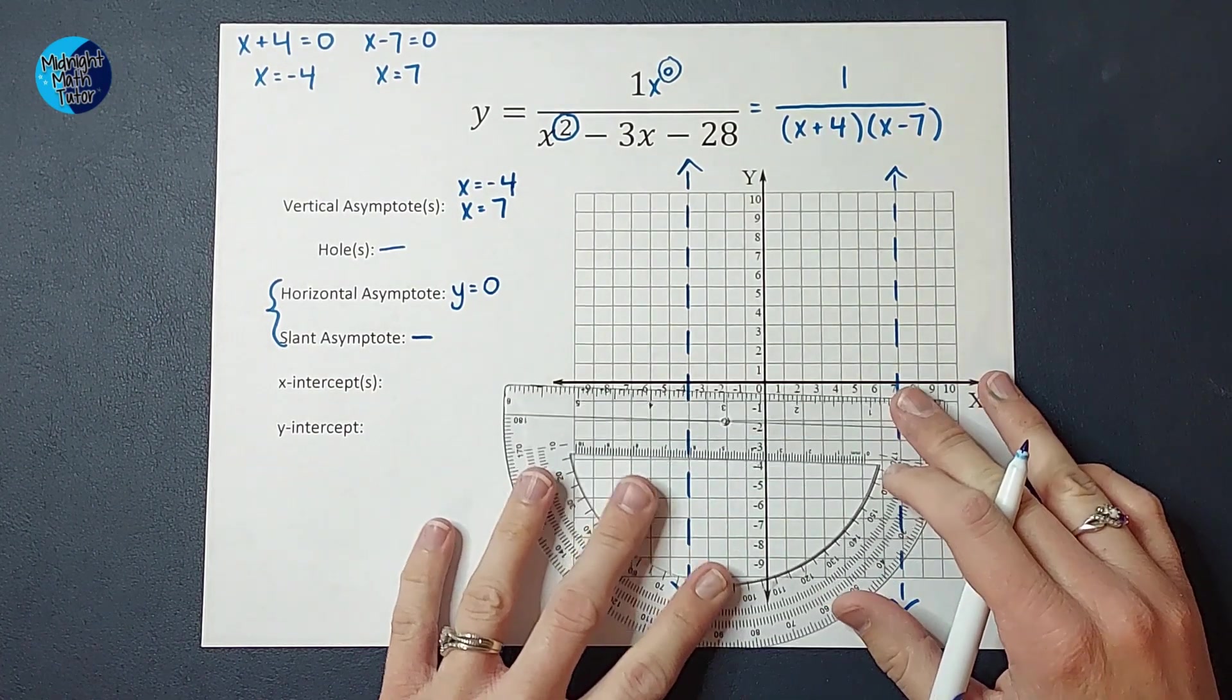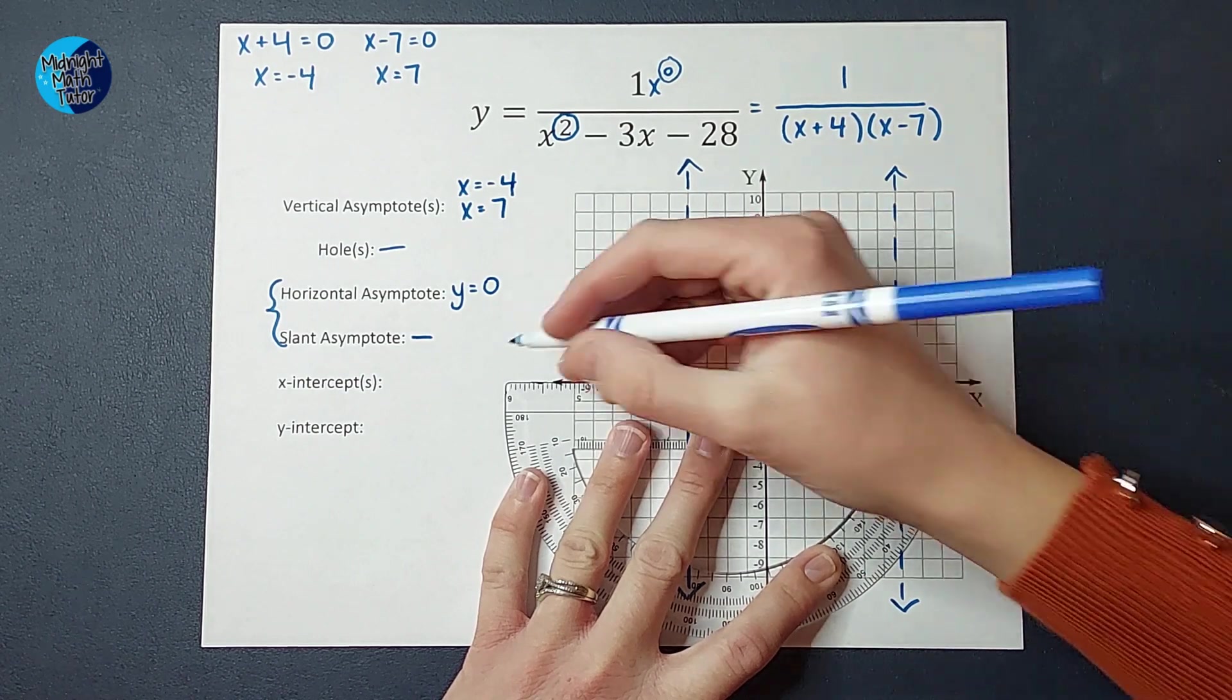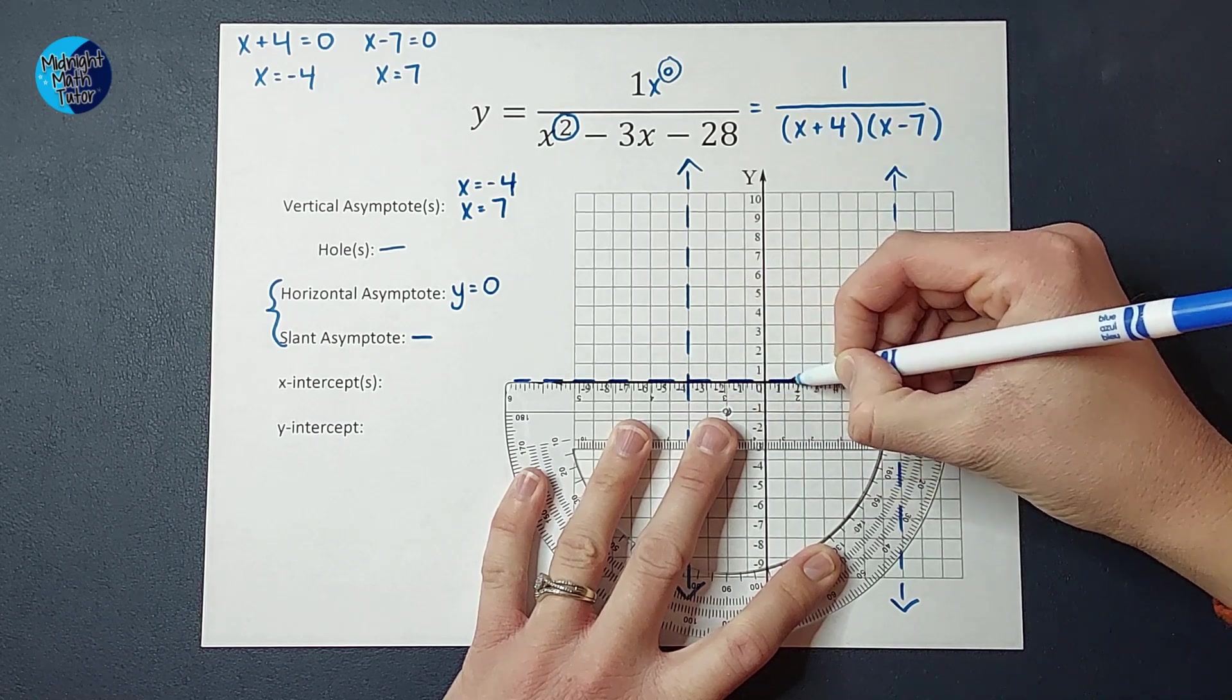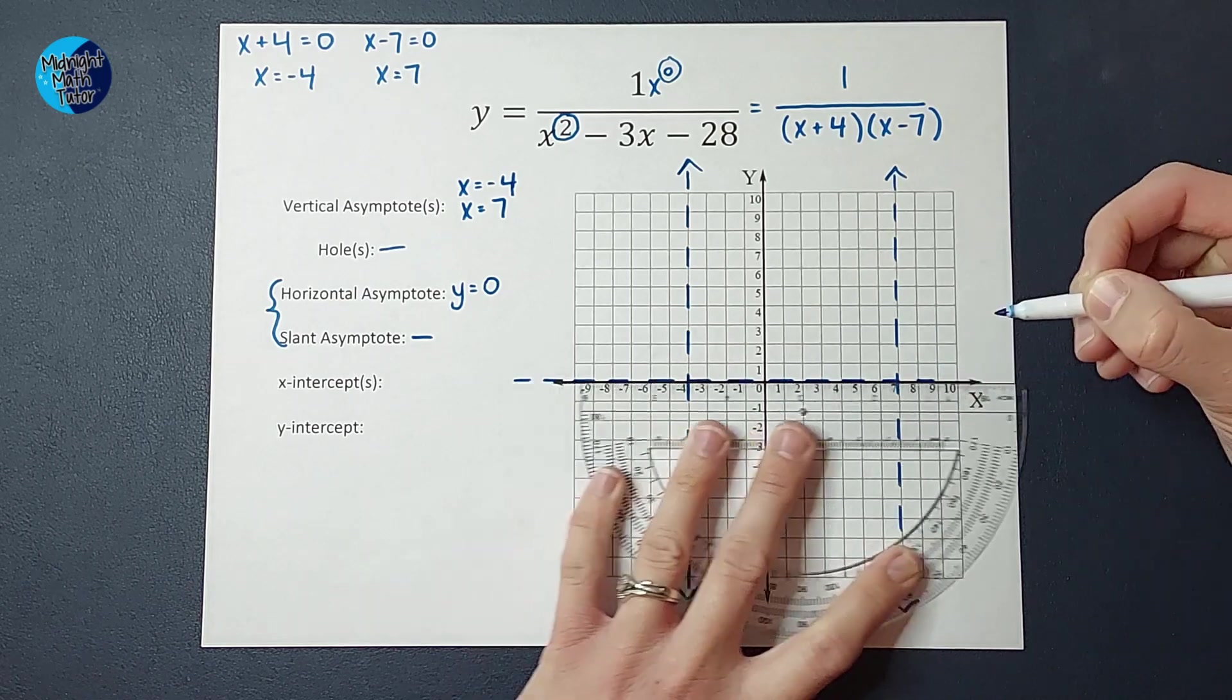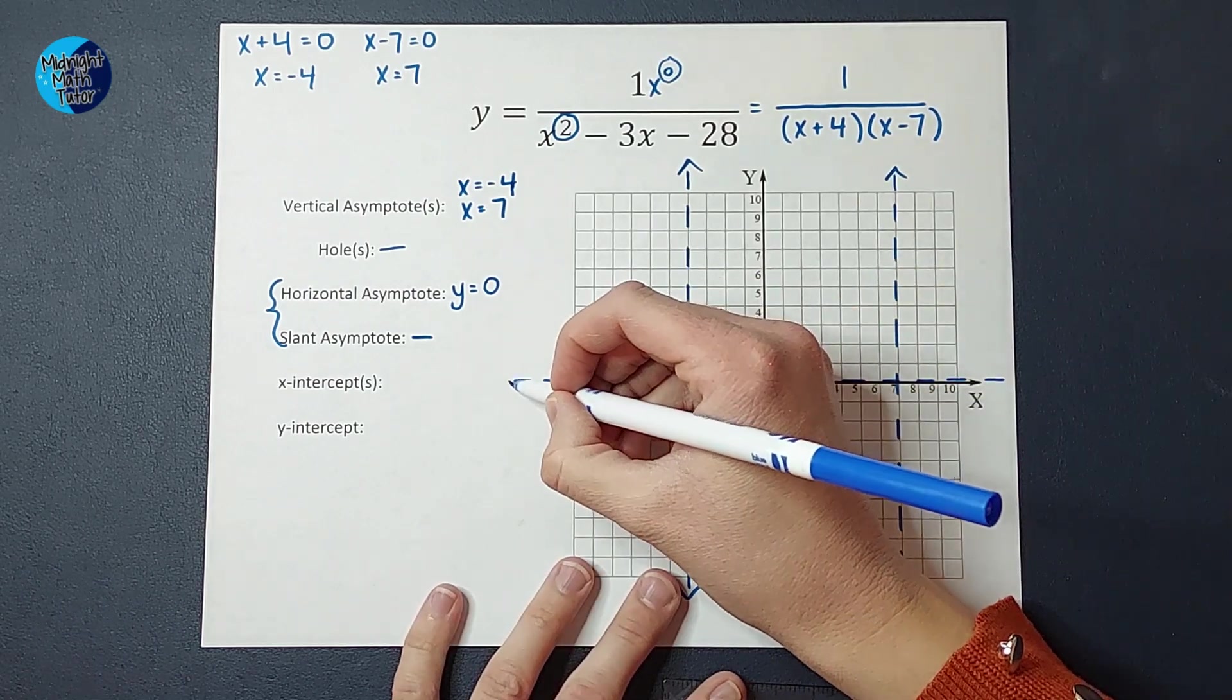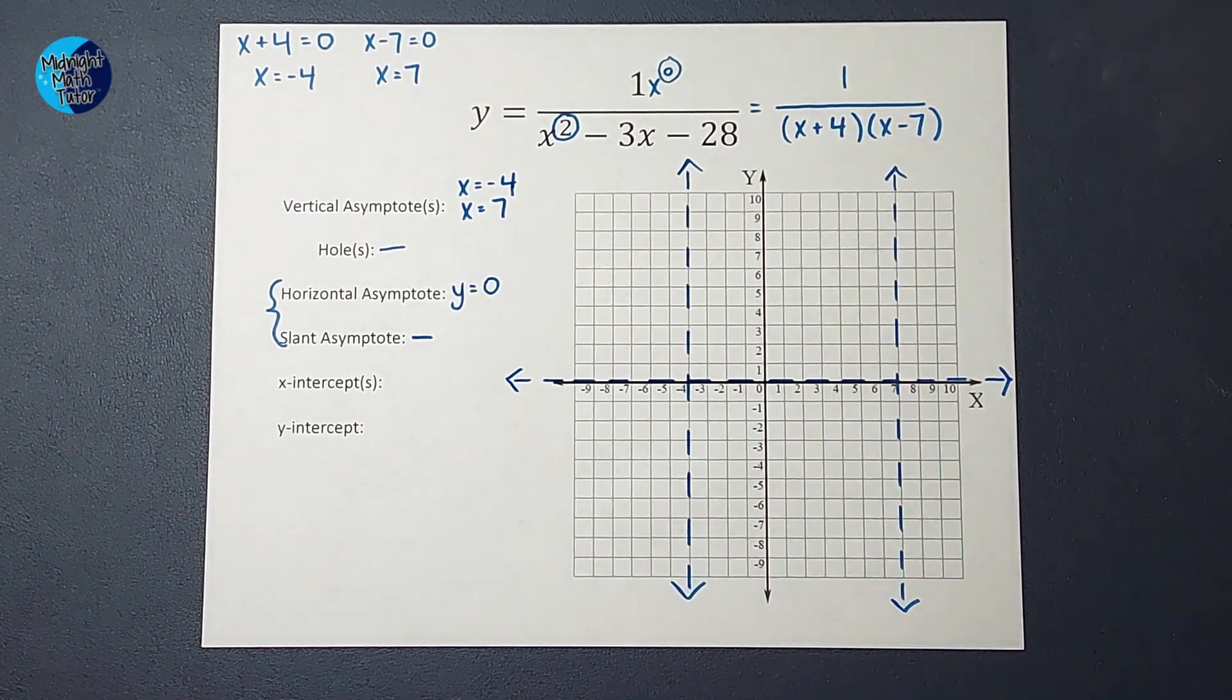Okay, again, I'm going to represent this on my graph with a dotted line. And it's going to be along the x-axis, actually. So here we go. Something to know about horizontal and slant asymptotes that might bug you a little, but it'll be okay, is they can actually be crossed. Horizontal and slant ones can be. Vertical ones, absolutely not.